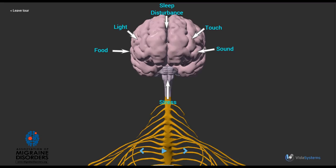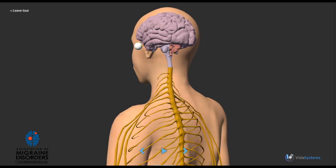In other words, certain triggers such as food, light, sound, touch, stress, and sleep disturbance send signals to the brain. And for a migrainer, that's just enough to set off a headache.